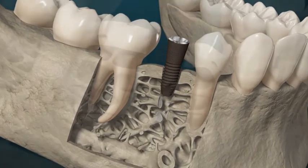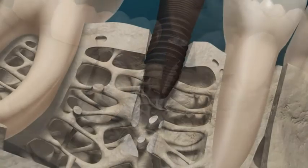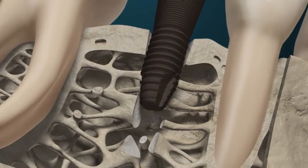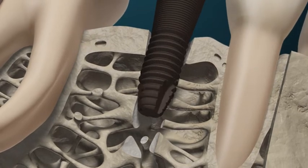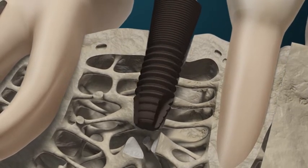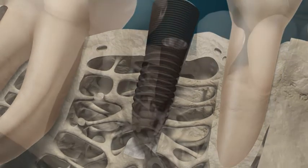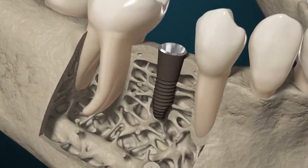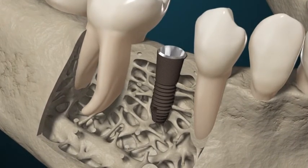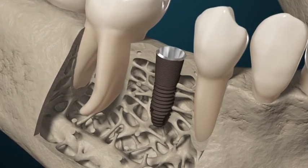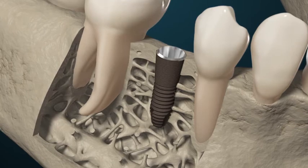Osseointegration, or secondary implant stability, requires a highly complex sequence of additional biodynamic processes. This is facilitated by finely tuned communication between the main actors of wound healing: the cells.